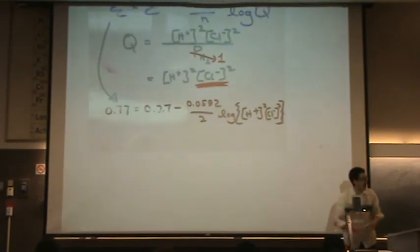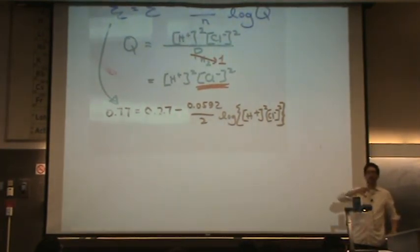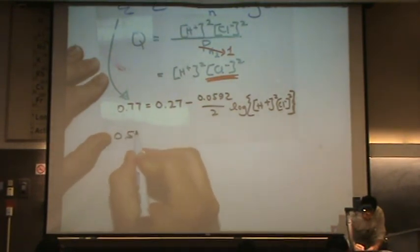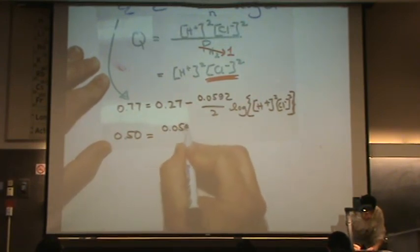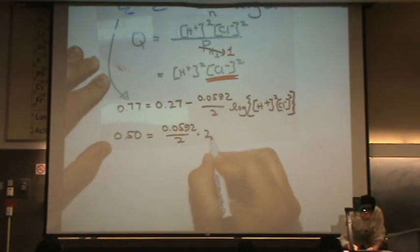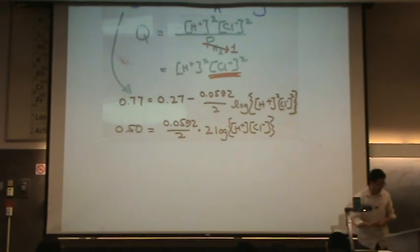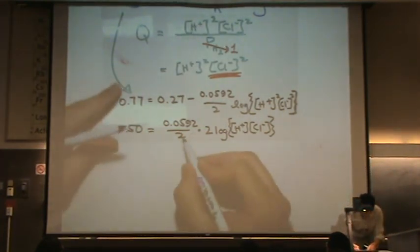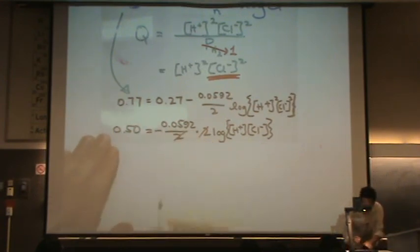0.0592 divided by 2 times the log of H+ squared Cl- squared. Since I'm padded into math, I went a mathematical route. The log of something squared can bring that exponent as a coefficient of the logarithm. Now, if that didn't make sense, this won't either. But, I took the 0.27 on this side. 0.0592 divided by 2 times 2 log H+ Cl-. Again, you don't have to solve it like this. But, I brought that 2 out because it conveniently cancels. So, what's that? Oh, yeah, thanks. And there's a negative still right there. Excellent.